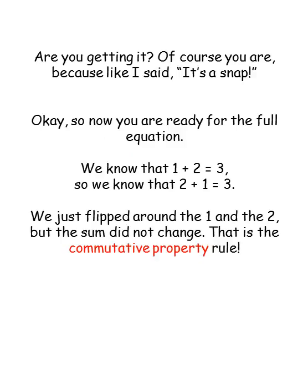Are you getting it? Of course you are, because like I said, it's a snap. Okay, so now you're ready for a full equation. We know that 1 plus 2 equals 3, so we know that 2 plus 1 equals 3. We just flipped around the 1 and the 2, but the sum did not change. That is the Commutative Property Rule.